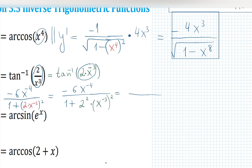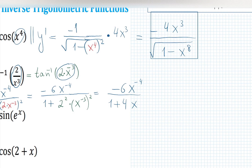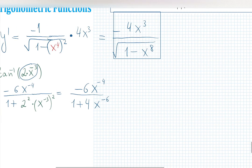So the answer becomes negative 6x⁻⁴ over 1 plus 4x⁻⁶. Negative 3 times 2 is negative 6. Finally, we can simplify.